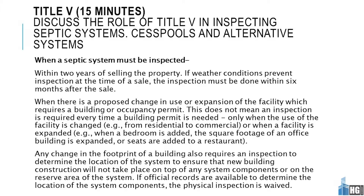A Title V inspection is also required when there is a proposed change in use or expansion of the facility that requires a building or occupancy permit. This does not mean an inspection is required every time a building permit is needed — only when the use has changed, for example from residential to commercial, or when the facility is expanded, such as when a bedroom is added, office square footage is expanded, or seats are added to a restaurant.